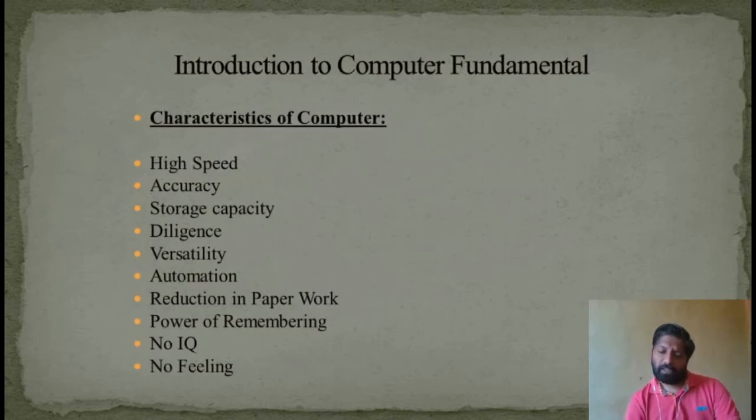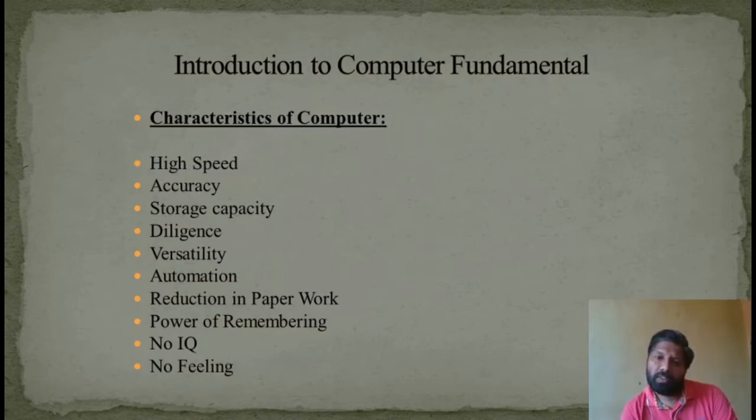Next, this is the characteristics of Computer. First is High Speed. This is the most important feature or characteristic of Computer that gives high speed. Because while doing something on a manual basis, you need time. Using a Computer, it actually gives you more speed and it will reduce your accuracy. This is accuracy. Doing some work, doing some calculation, we may fail sometimes. We may be wrong. Using a Computer, if you use the right command, it will give you the correct answer. Accuracy is much higher.